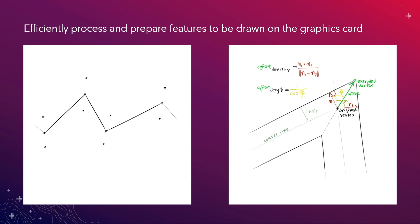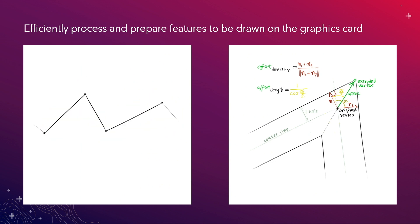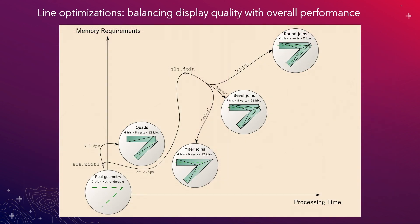Once we have that data, we need to efficiently process and prepare the features to be drawn on the graphics card. We spend a lot of time trying to optimize, especially for lines — we want to balance display quality with overall performance. If we can render the line without any noticeable visual degradation using something that requires low memory and low processing time, the API will do that for you.